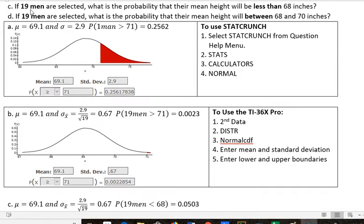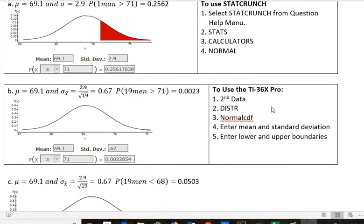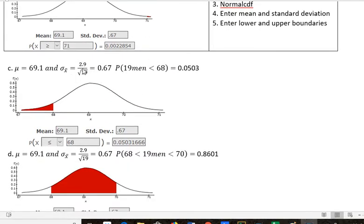The next one is very similar, but 19 men are selected. What's the probability that their height will be less than 68 inches? Again, I'm going to use the standard error of the mean instead of the standard deviation that was given. And I'm looking at 19 men being less than 68. I'm really saying the average height of 19 men or the mean height of 19 men.